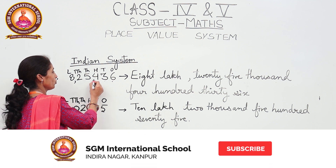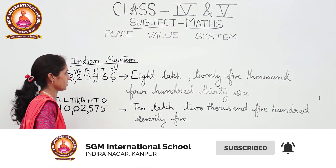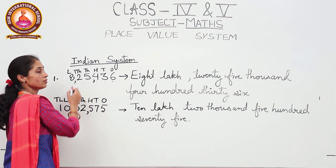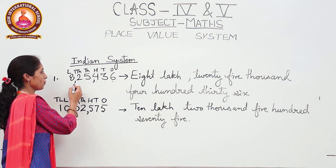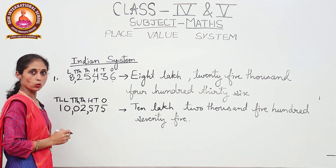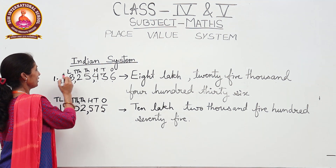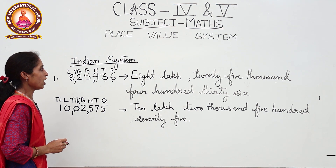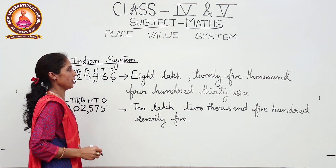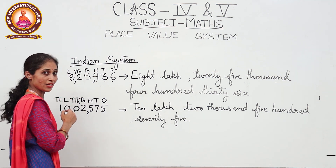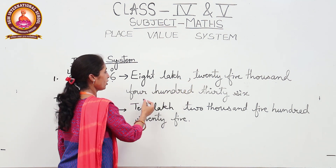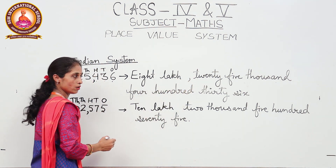So we will put the first comma after the hundreds place. Five is at the thousands place and two is at the ten thousands place, so we will put the next comma after the ten thousands place — that is, between eight and two. Eight is at the lakhs place. Now we are going to write the given number in the form of a number name: eight lakh twenty-five thousand four hundred thirty-six.